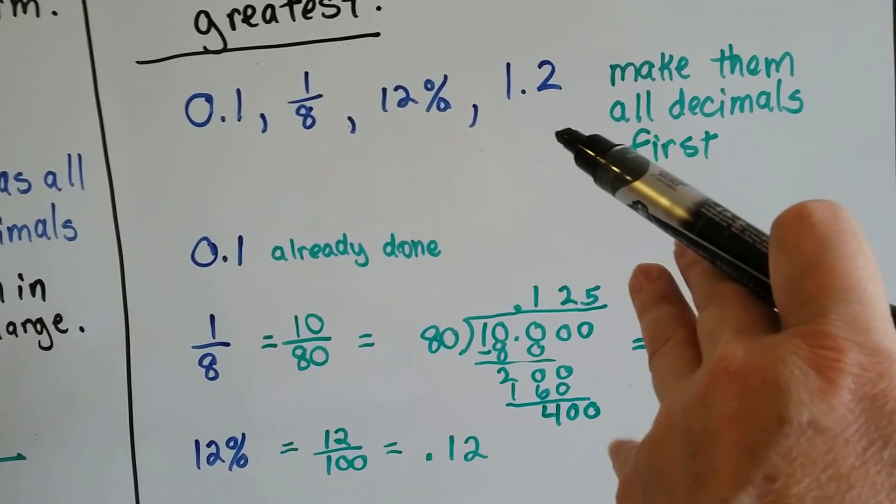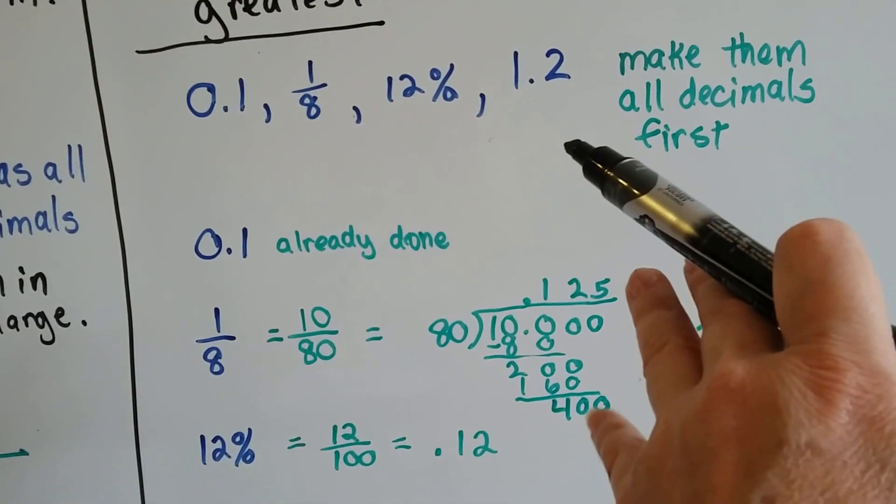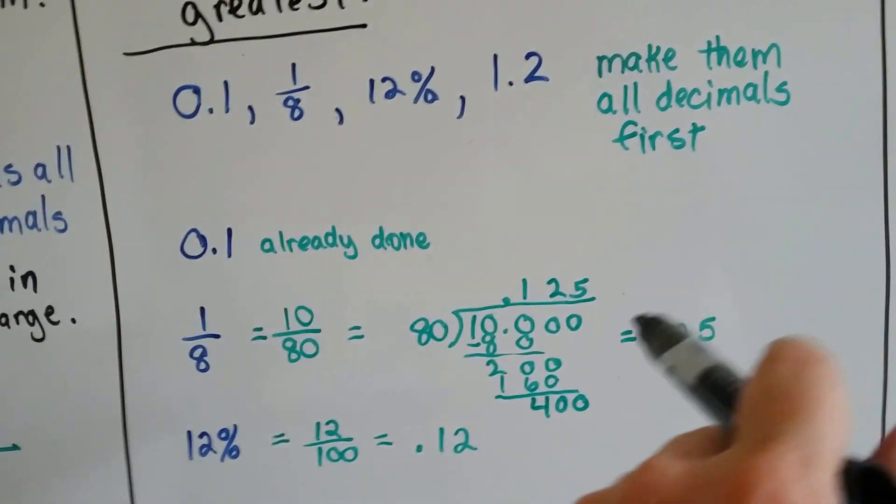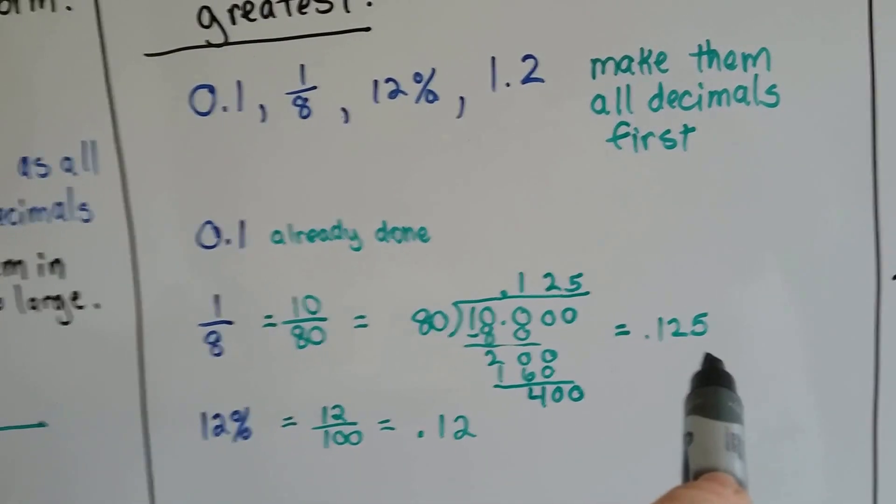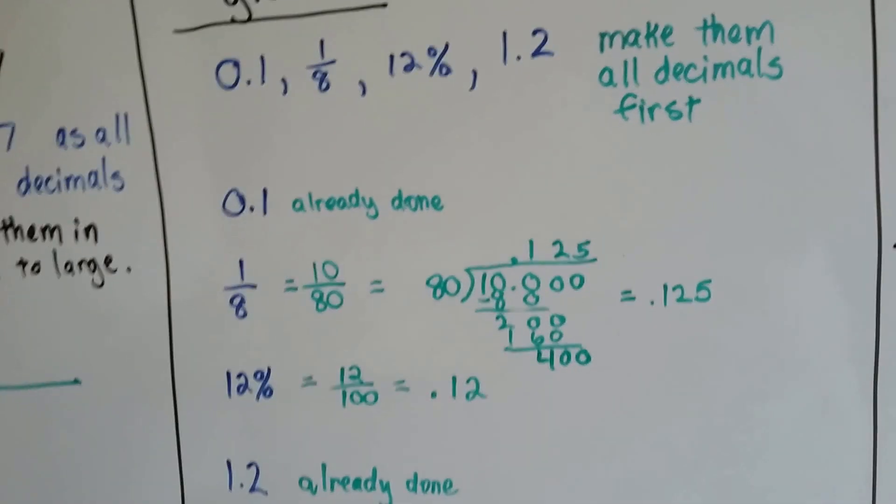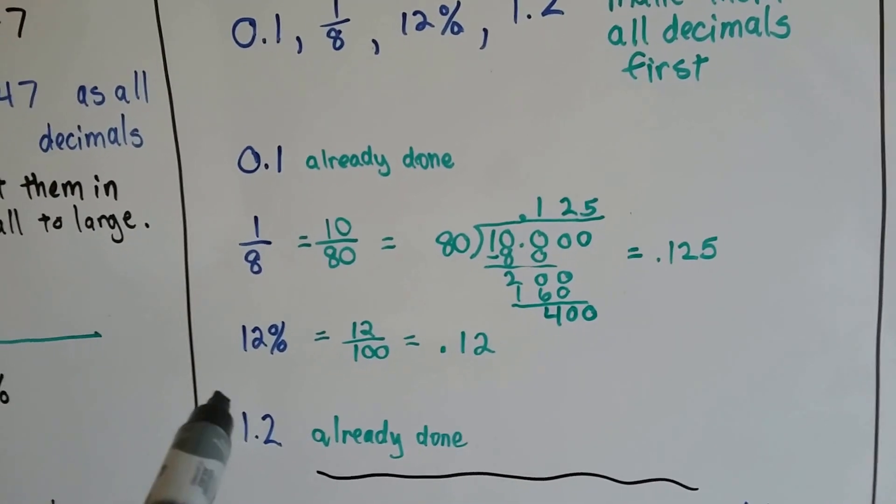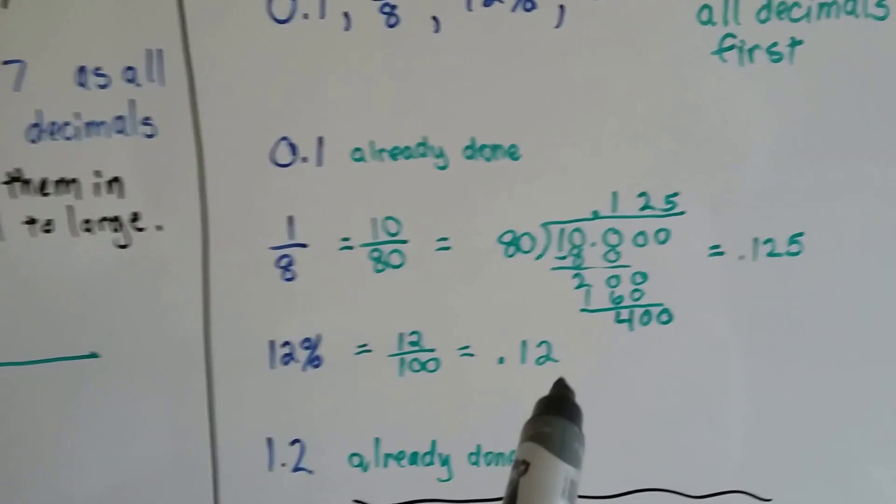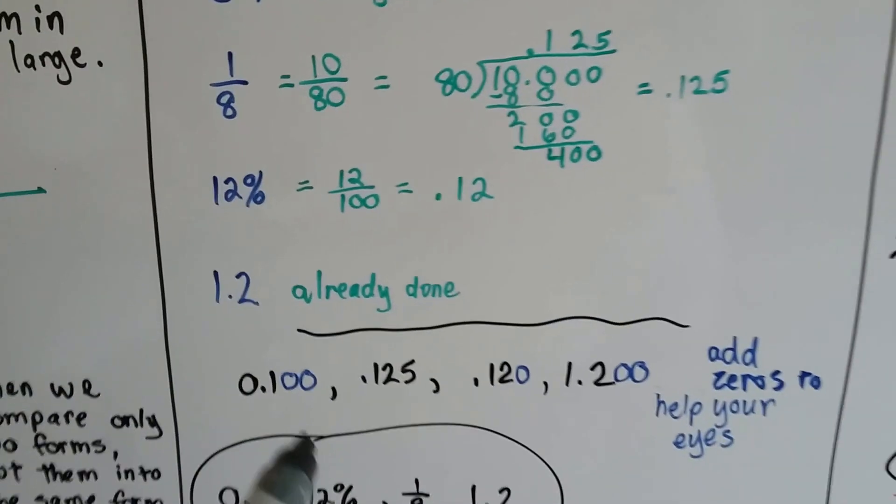I added another zero and dropped it down. How many times can 80 fit into 400? 5 times. 80 times 5 is 400. So I know it's .125. That's what 1 eighth is. So now I can put that off to the side. 12% is 12 over 100. So I know it's .12. Now I can put them in order.